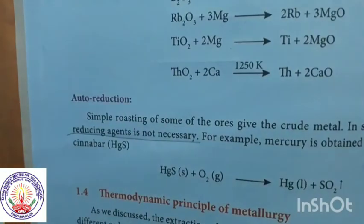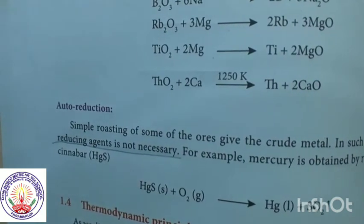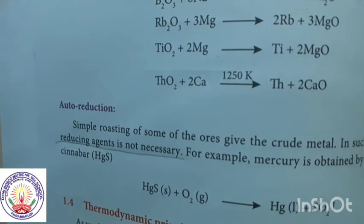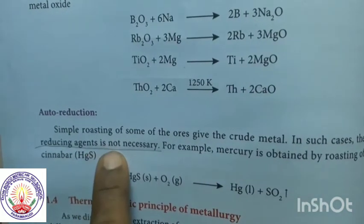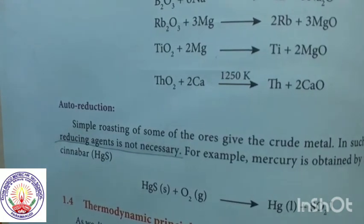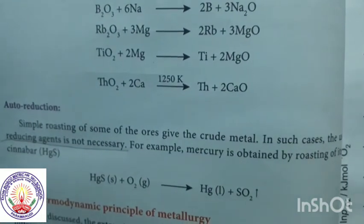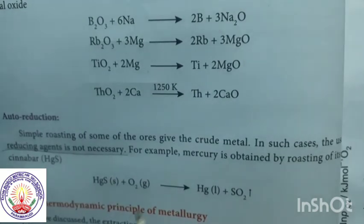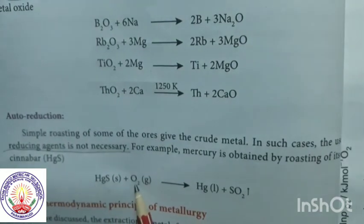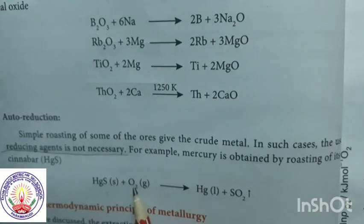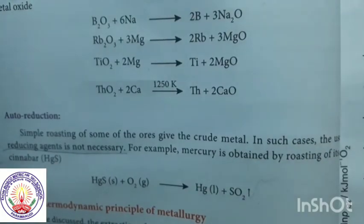The last one is auto-reduction. In this process, no reducing agent is necessary. For example, if we are roasting mercury ore, during roasting itself we get pure mercury — sulphur dioxide is evaporated. The good example for auto-reduction is mercury: when it is roasted, we directly get the pure mercury.